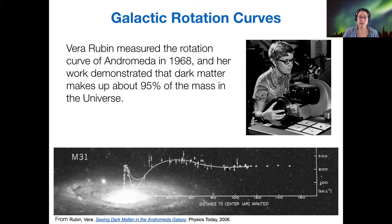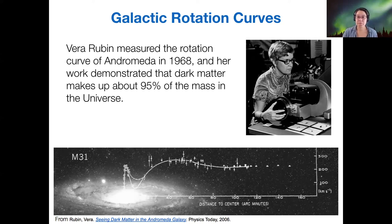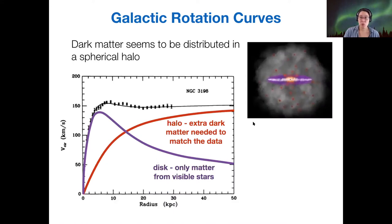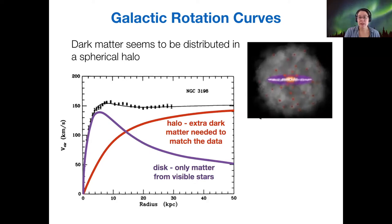It kind of begs the question: why is there dark matter everywhere, and what is it if it's not stuff that we see? What we do know is that the dark matter seems to be distributed in a spherical halo. This is the model that best reproduces our observations.